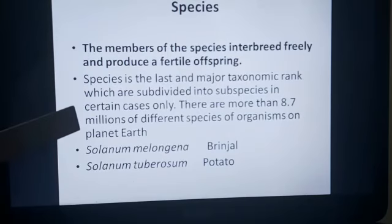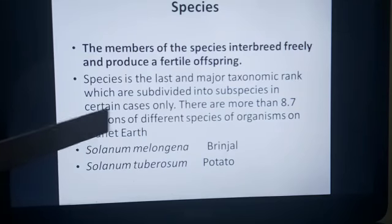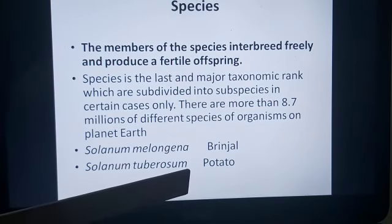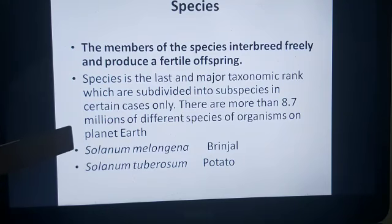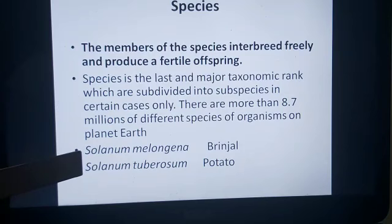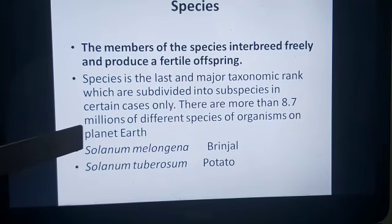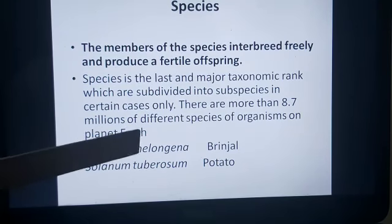An interesting example: Solanum is the name of a genus. Solanum melongena is brinjal, and Solanum tuberosum is potato. This shows the specificity of classification — brinjal and potato are related because they belong to the same genus Solanum, meaning there are certain similarities in their flower or internal structure. But since they are very different from each other, they are placed under different species.